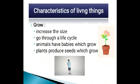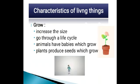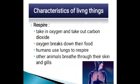Number two: growth. All living things grow and increase their size, and for this purpose they go through a life cycle. All animals have babies which grow and come to resemble their parents, while adult plants produce seeds which grow to make new plants.